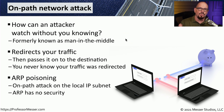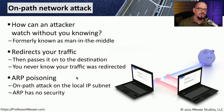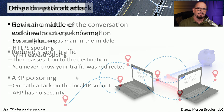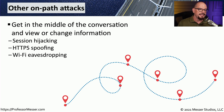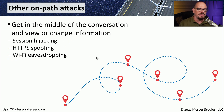We've already seen one type of on-path attack using a wireless evil twin, but there are many different kinds. Another popular type is ARP poisoning, using the Address Resolution Protocol, where the attacker can spoof the IP address of a device to effectively sit in the middle of a conversation. Other types of on-path attacks include session hijacking, HTTPS spoofing, and Wi-Fi eavesdropping — just a sample of what can be performed with different devices or protocols.